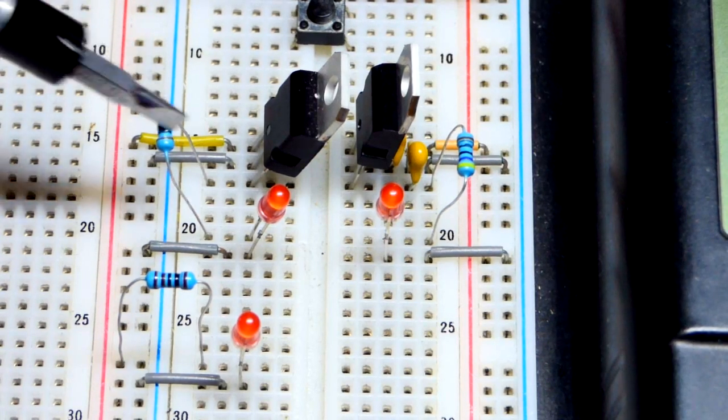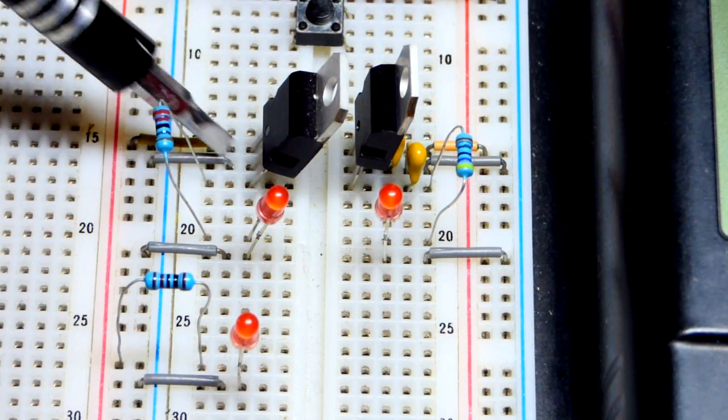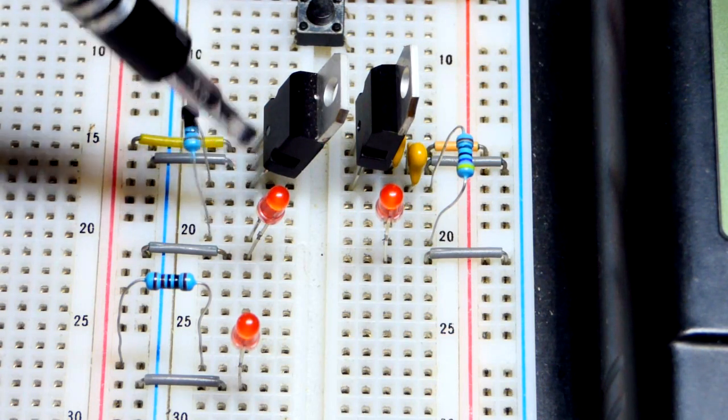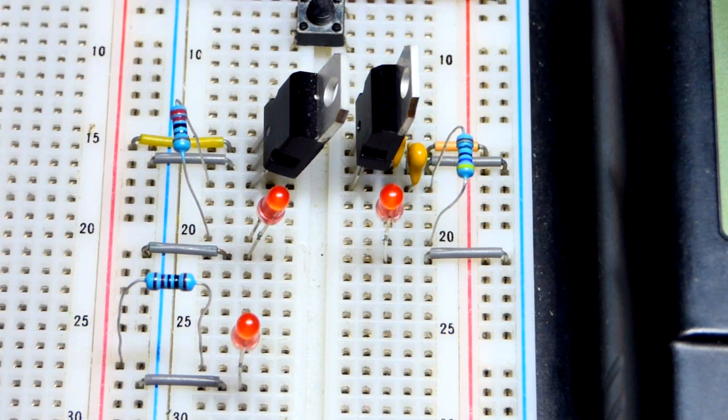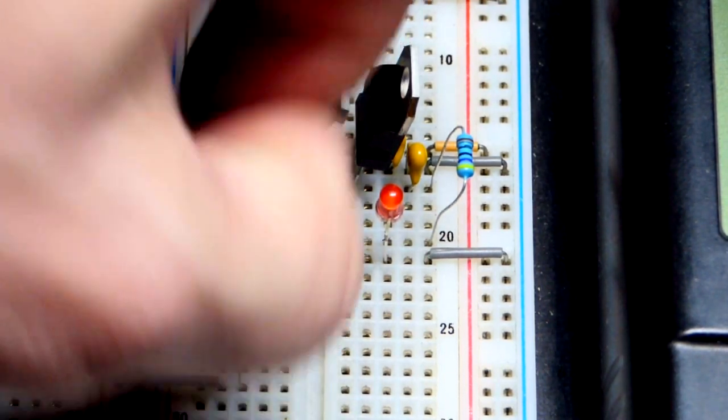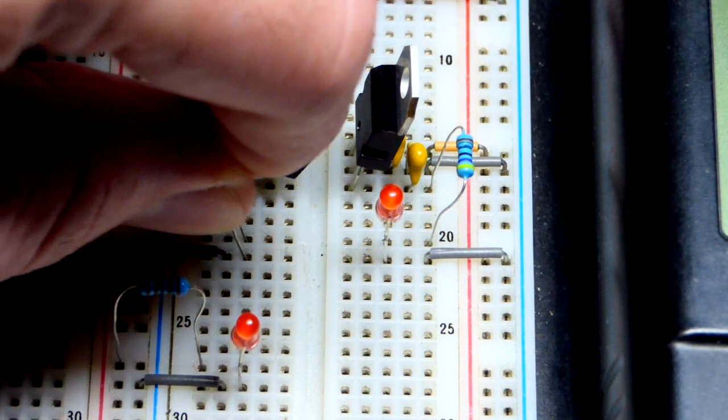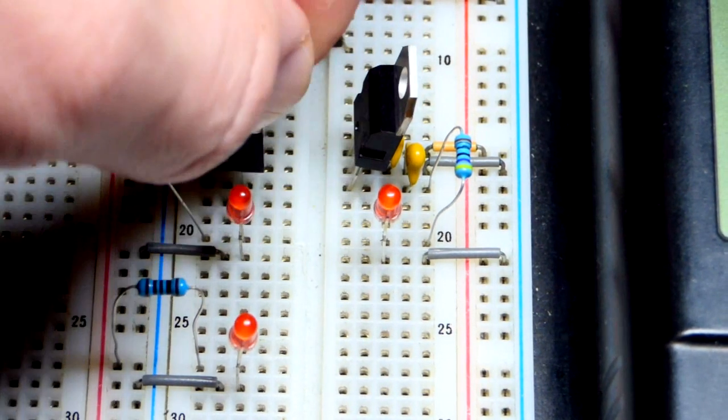And so here we are on the board. 7805, the input to positive, the ground to the negative supply there ground, and then we have the output at the bottom, flat side to the left. 220 ohm resistor to protect the LED. Remember the LEDs need the long lead, the anode, towards the more positive side. If the LED is not lighting up, good chance it's in backwards. Short lead, the cathode, going to ground. Off to the other side.